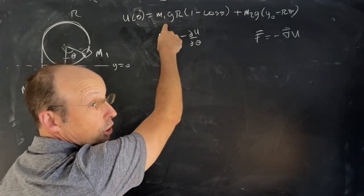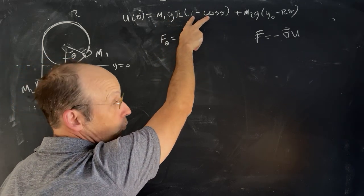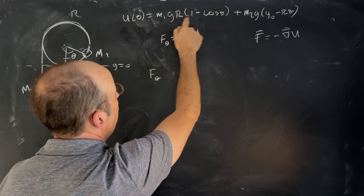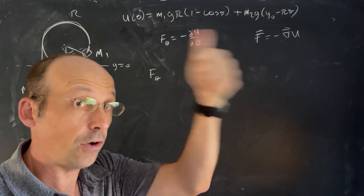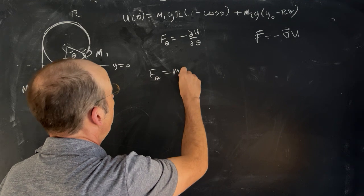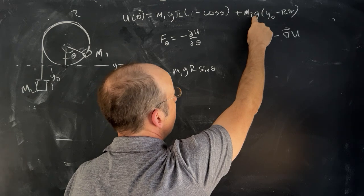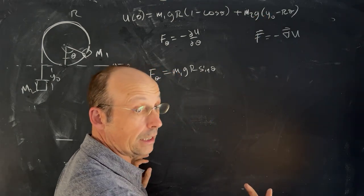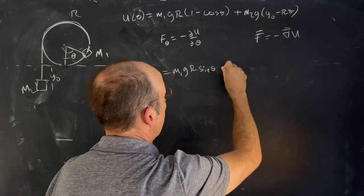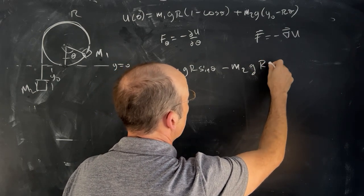Let's go ahead and take the derivative of this with respect to theta. The partial derivative with respect to theta. So I have M1gr times 1. I take the derivative of that and I get 0. Because it's a constant. And then I have M1gr negative cosine theta. The derivative of cosine theta is going to be negative sine theta. So I get negative and negative. So I get M1gr sine theta. Over here I have M2gy0 which is just a constant. The derivative is 0. And then I have negative M2gr theta. So I get minus M2gr, there's no theta. Because I took the partial derivative with respect to that.